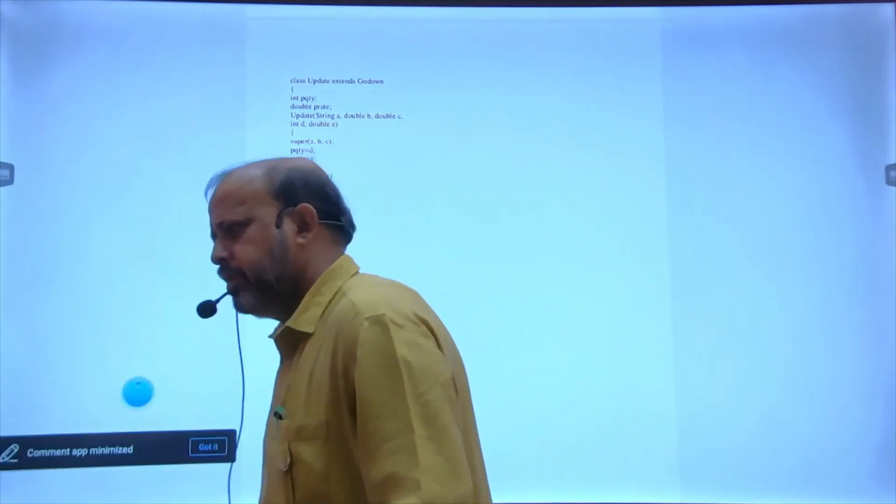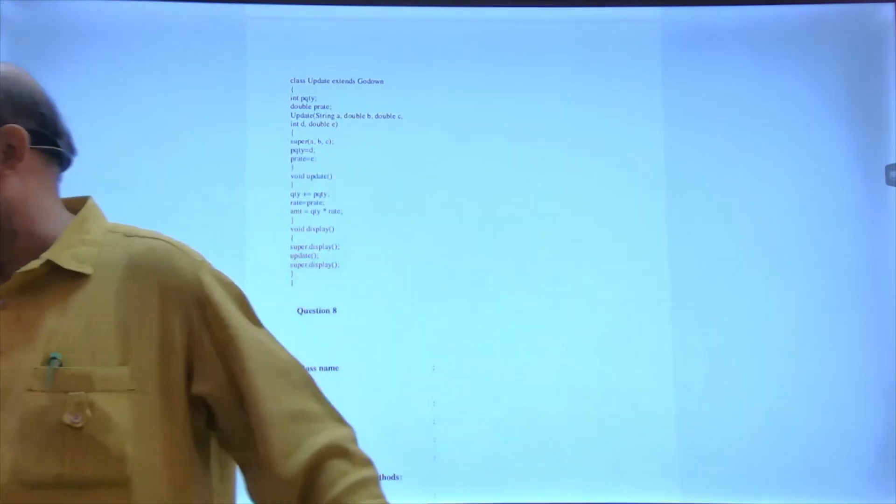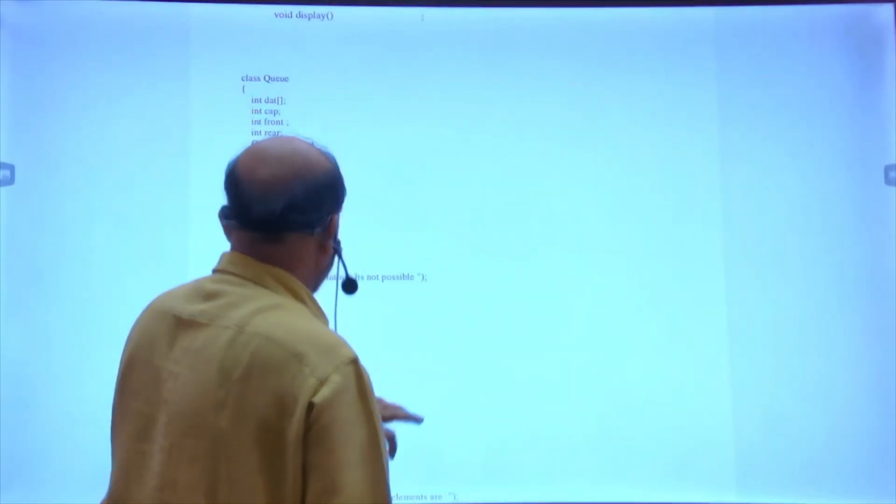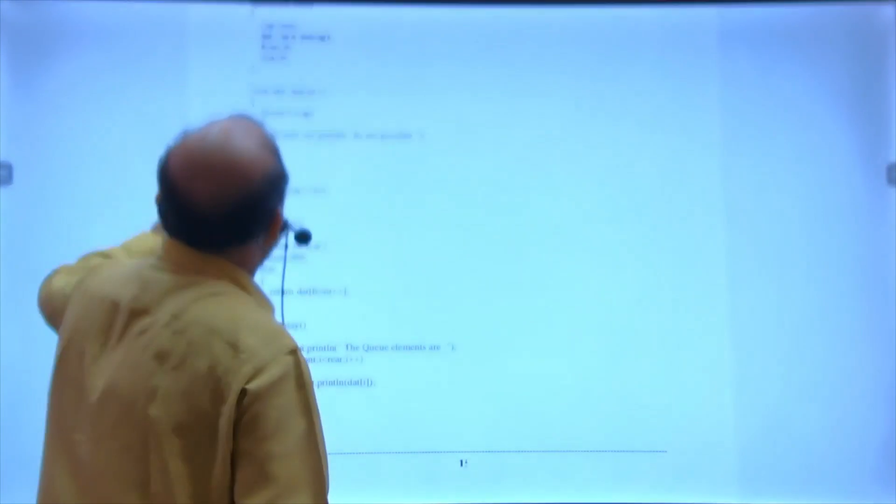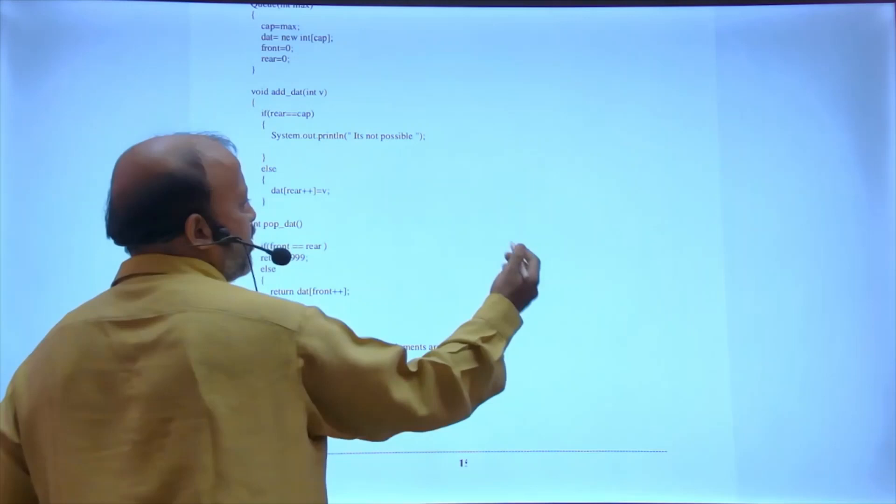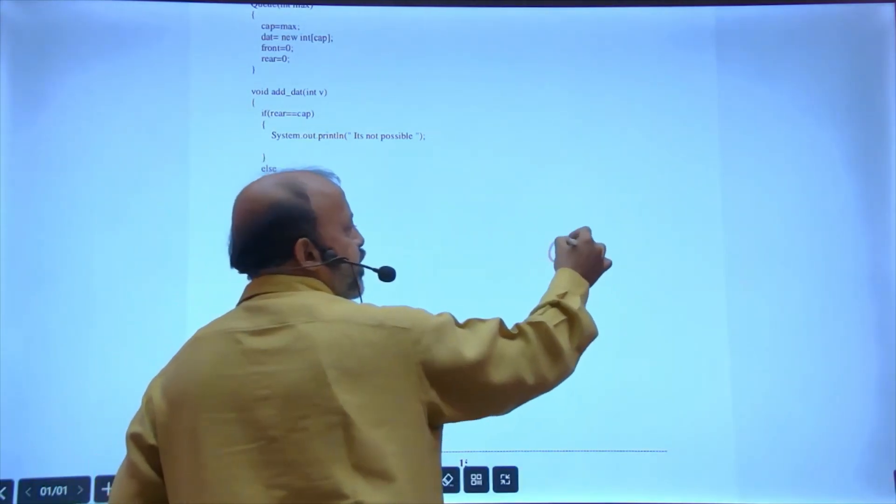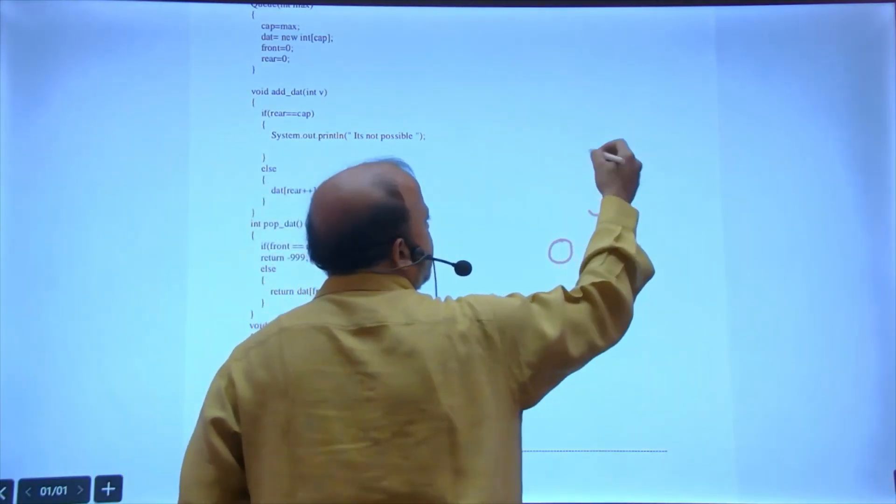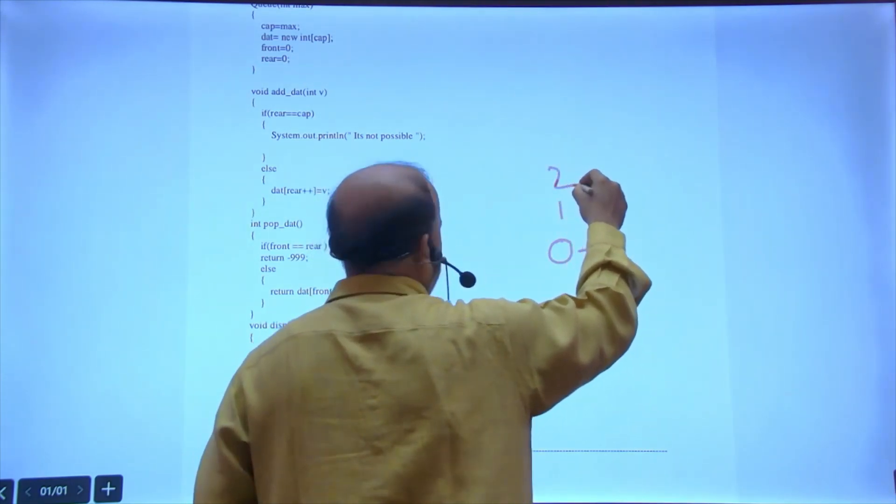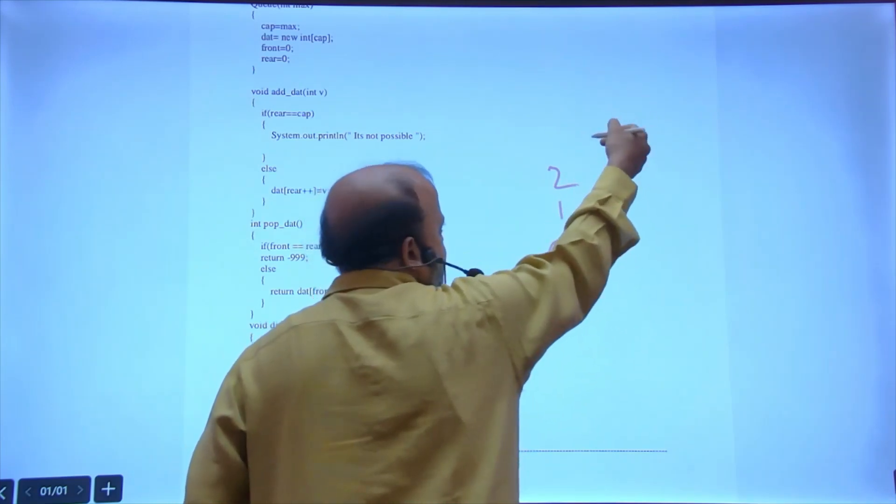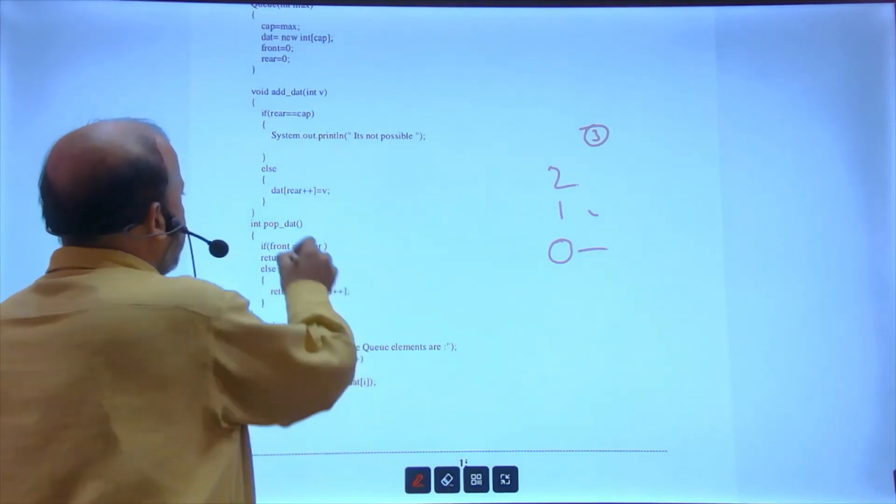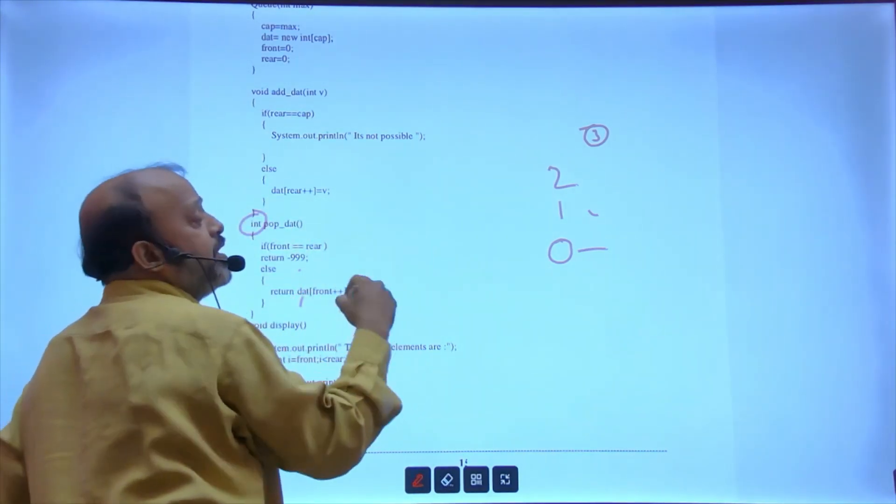After this you have queue. In pop, if front equals rear - front and rear are equal. Front will be initially zero. Rear, if three elements are there, rear will be - first time zero, then one stored, so rear becomes three. If front and rear are same and returning minus 9 because int is given.